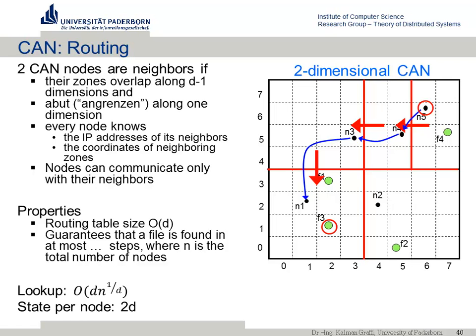Regarding the lookup: the routing table size is O(D). The lookup complexity is O(D · n^(1/D)), which is a D-th root of n times D. That is basically the shortest distance to get from one corner to another in that topology — you have to integrate the square of the dimension. Think of it as shortest-distance routing in that kind of environment with that topology.